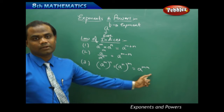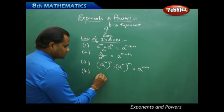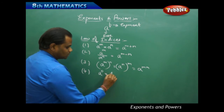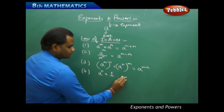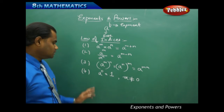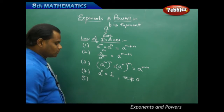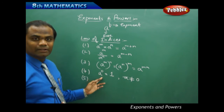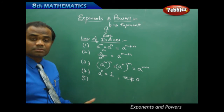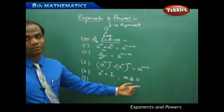The fourth law of indices states that a power 0 is always 1, where a is not equal to 0. Any non-zero value raised to the power 0 is always 1. For example, 100 power 0 is 1, and 1000 power 0 is 1 — anything power 0 is 1, except when the base is zero.